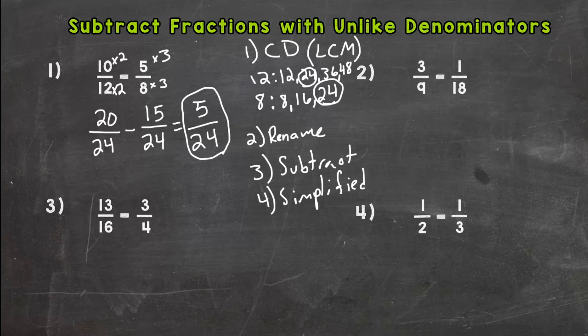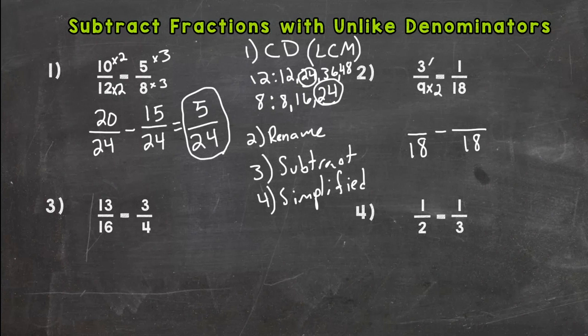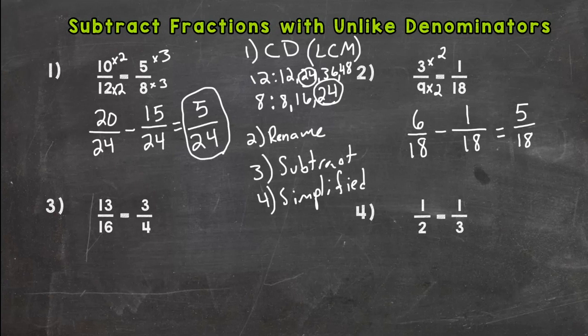Number 2: 3/9 minus 1/18. If we were to write our lists out or maybe we can recognize what the least common multiple is, you should get to 18. Let's rename here. 9 times 2 is 18, so 3 times 2 is 6. Our second fraction already has a denominator of 18, so just drop that one. Now we subtract. 6 minus 1 is 5, keep our common denominator of 18. There is nothing we can divide out of both 5 and 18, the only common factor is 1, so we are done. 5/18.